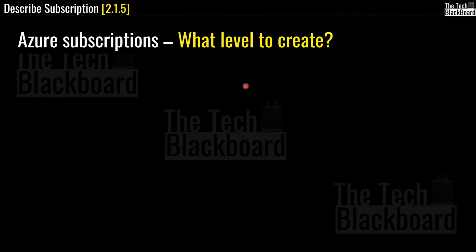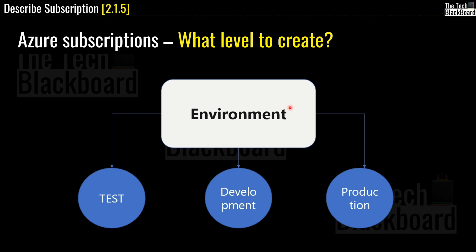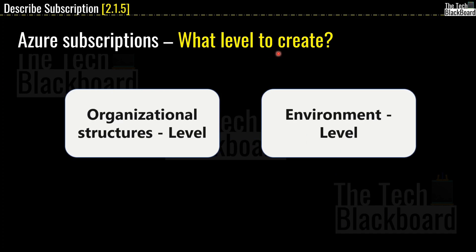Creating subscriptions at the department level is just one example. You can also create subscriptions at the environment level — for example, a test environment, a development environment, and a production environment. So there are two main examples of levels at which you can create Azure subscriptions: organizational structure level and environment level. Of course you can create Azure subscriptions at any level that best suits your business requirements.